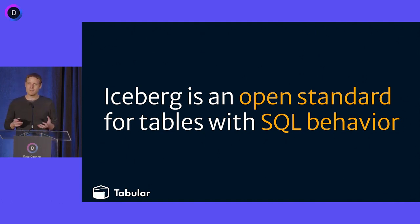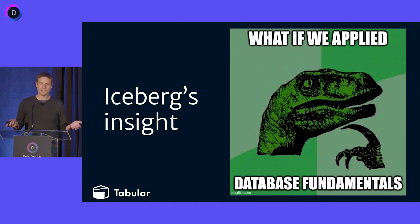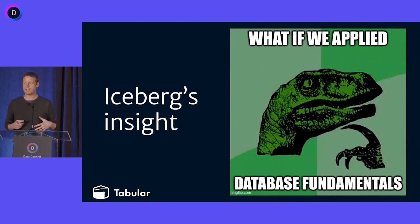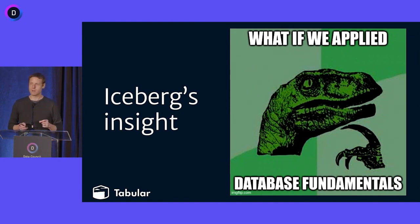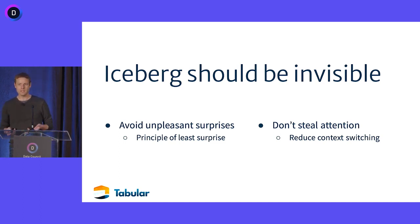The central idea behind Iceberg, if I was to sum it up, is really: what if we applied data engineering — database fundamentals — to this table problem? What would that look like? It looks remarkably like what we had in 1992. It's tables that work as an abstraction, so you don't have to care about what's underneath the table, and you really shouldn't care about what's underneath the table. To most users, to consumers, Iceberg should be almost completely invisible.